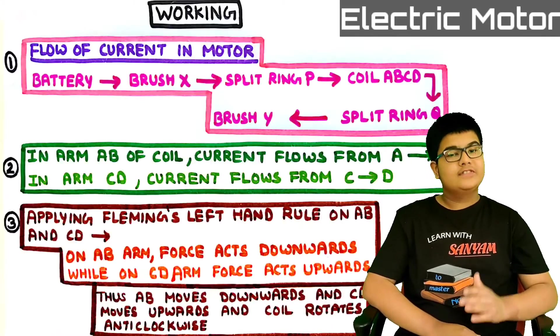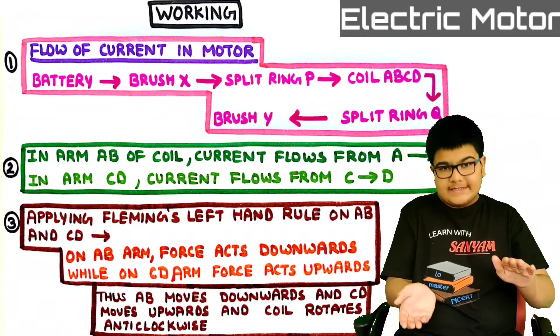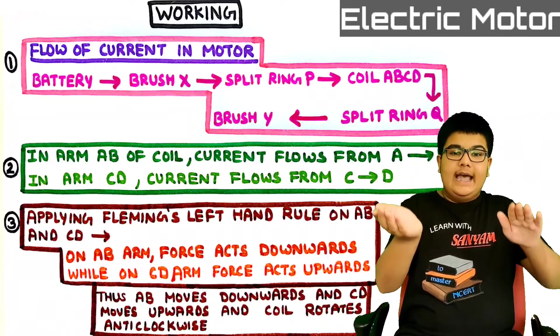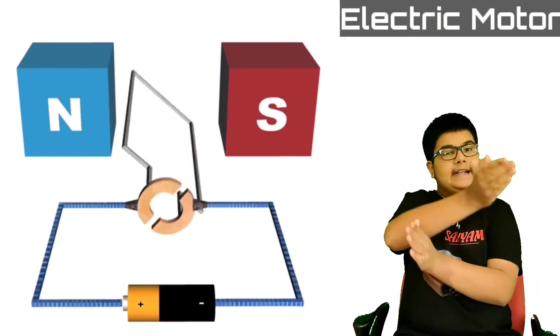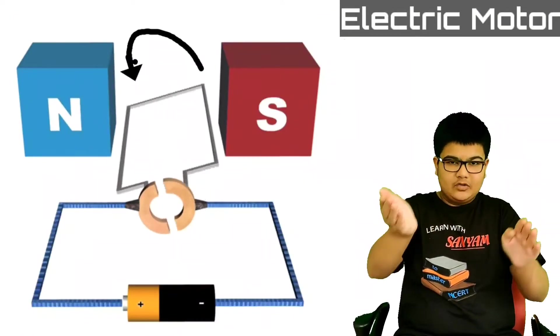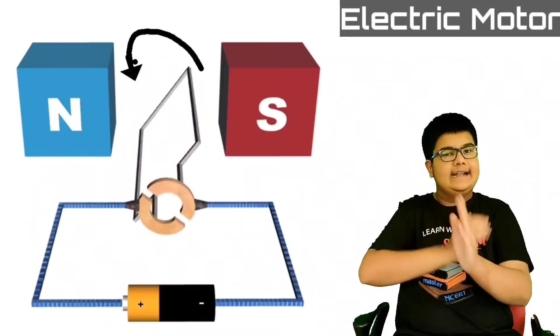Thus, arm AB moves downwards, while arm CD moves upwards. And the coil rotates anti-clockwise. In this you can see that the coil is rotating anti-clockwise.